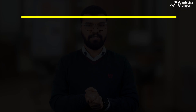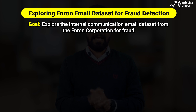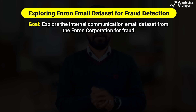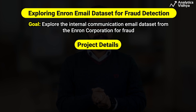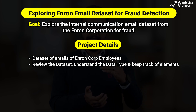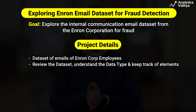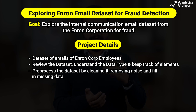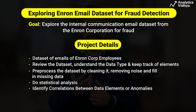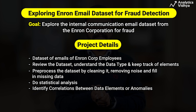This project aims to explore the internal communication email dataset from Enron Corporation to find patterns and classify emails in an attempt to detect fraudulent emails. The dataset consists of a massive database of more than 600,000 emails belonging to Enron employees. We review the dataset documentation, understand the data types, pre-process the data by cleaning it, removing noise, and addressing missing data, then perform statistical analysis to identify correlations and anomalies. This is an important classification project at the intermediate level.